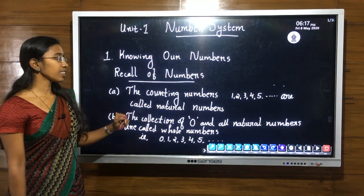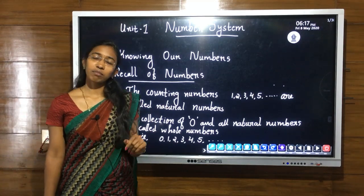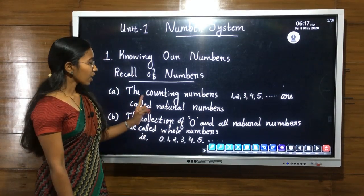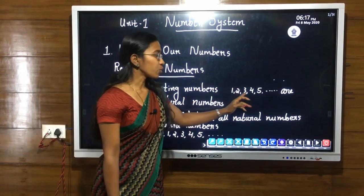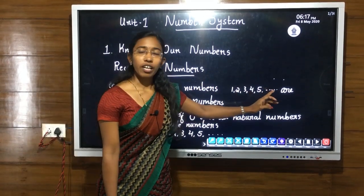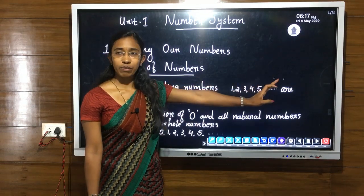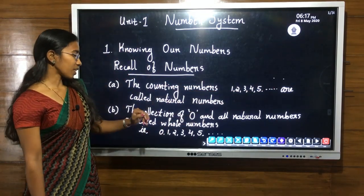The first one is counting numbers, also called natural numbers. Counting numbers means 1, 2, 3, 4, 5 — that goes on to plus infinity. That is our natural numbers.